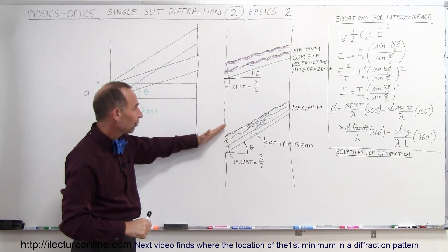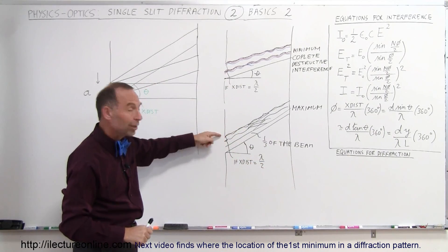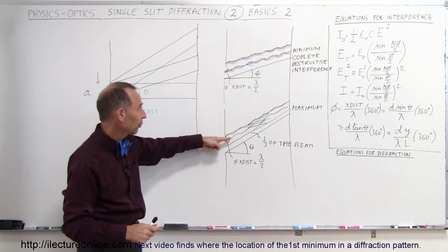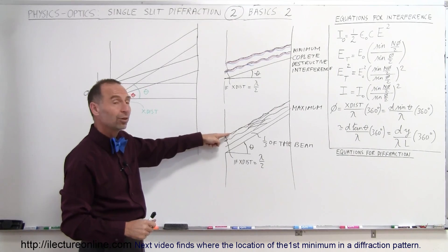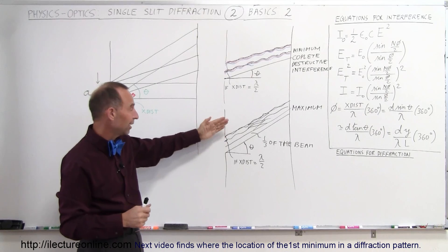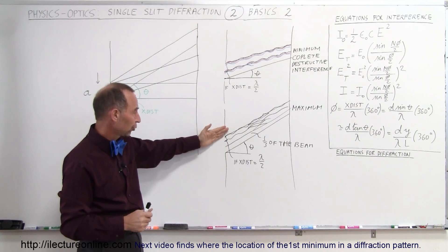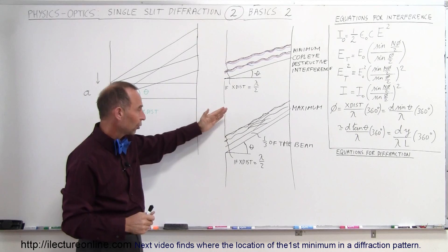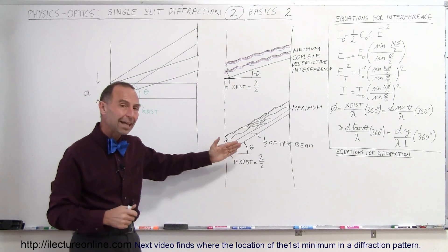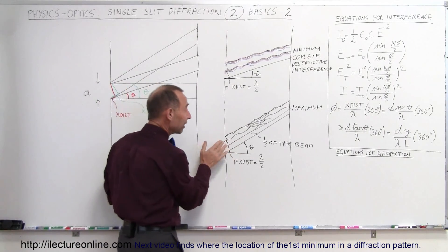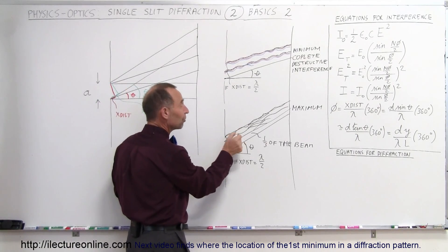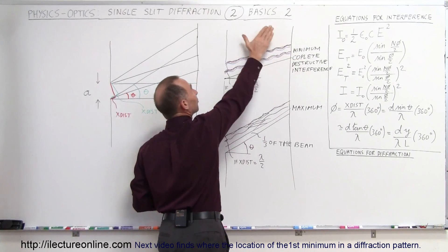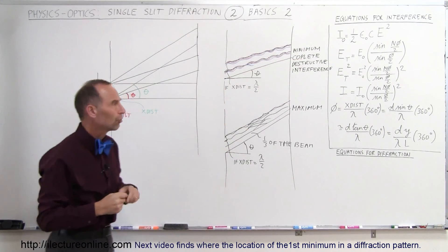Looking further up, you may only have to go one-quarter of the way into the beam to find a half-wavelength path difference. The first quarter cancels the second quarter, and the third quarter cancels the fourth quarter — so the whole beam is again completely destructively interfered with portion by portion, and you see another minimum further up the screen.